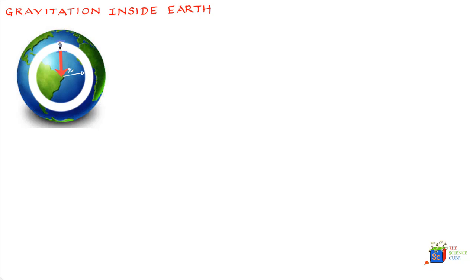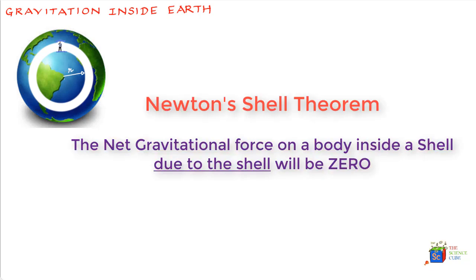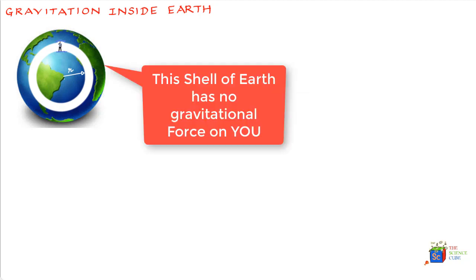Newton's shell theorem explains that the net force of gravitation on a body inside a shell is always zero. Now you must remember that various parts of the shell are creating a gravitational force on you, but the net sum of these forces, or the vector sum of these forces, equals zero. In fact, if you start pulling vectors from yourself to various parts of the shell, you can intuitively realize that the vector sum will turn out to be zero.